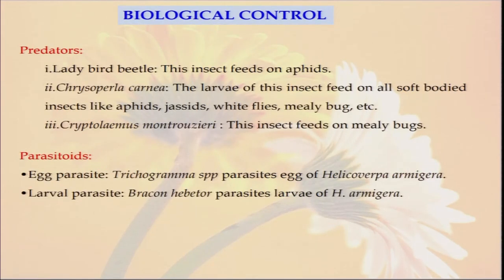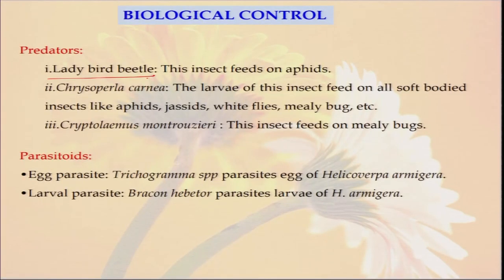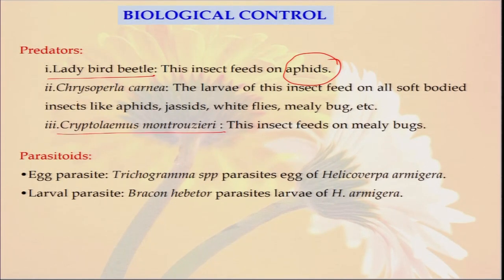Now, for biological control — how can we effectively use different types of bio organisms in our farm? The bio organisms may be some pathogens, some fungi, some insects, and lots of other microorganisms. Lady bird beetle is a beneficial insect — they feed on other insects like aphids. Aphids cause tremendous damage in brassicaceae and other families. So if the lady bird beetle population is high, automatically aphids will be controlled. Similarly, Chrysoperla is also used as a predator.